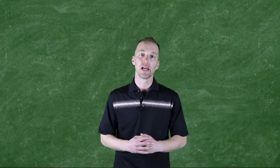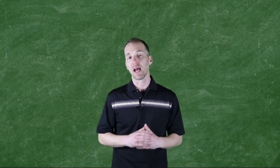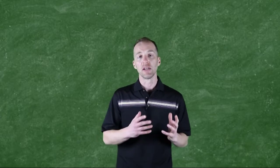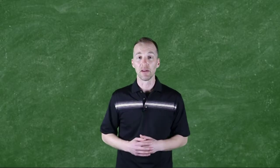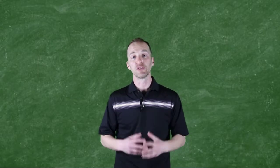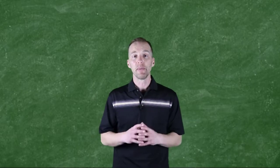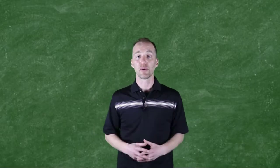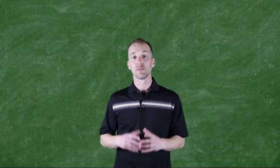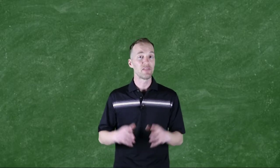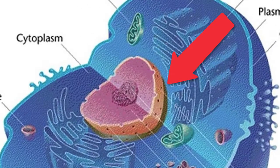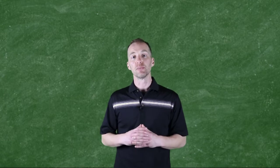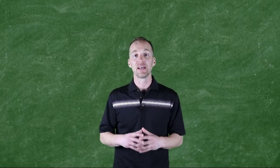I've introduced you to two of the three domains of life. We've talked about the prokaryotes and how they've been separated into the eubacteria and archaea domains, but we're gonna shift our focus now and talk a little bit more about that third domain of life. The one binding characteristic of all organisms in this domain is the presence of a true nucleus, or a membrane-enclosed piece of genetic information. We refer to organisms in this domain as eukaryotes.